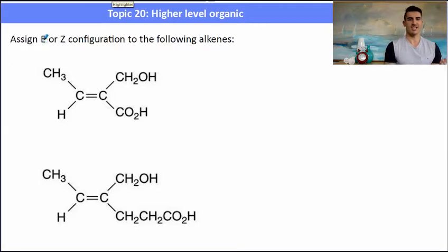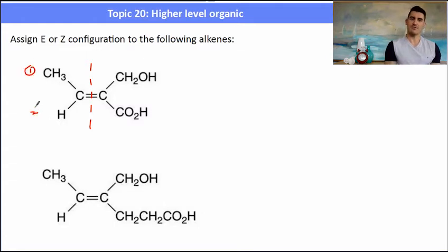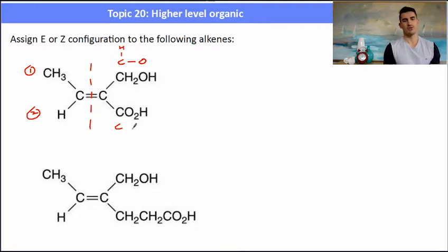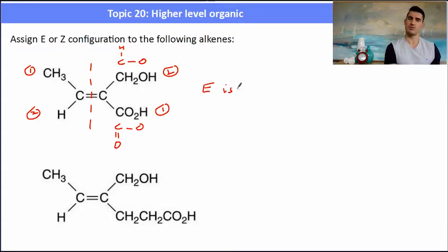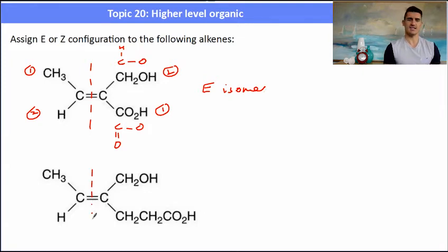Here are two more examples — assign E or Z configuration to the following alkenes. We apply the EZ nomenclature rules: cut the double bond in half and look at each side separately. On one side we have a methyl group and a hydrogen — the methyl clearly takes precedence. On the other side we have a CH₂OH, which is a carbon bonded to one oxygen, versus a carbon bonded to two oxygens. The one with two oxygens takes precedence. With the two highest-priority groups on opposite sides, that is the E isomer.